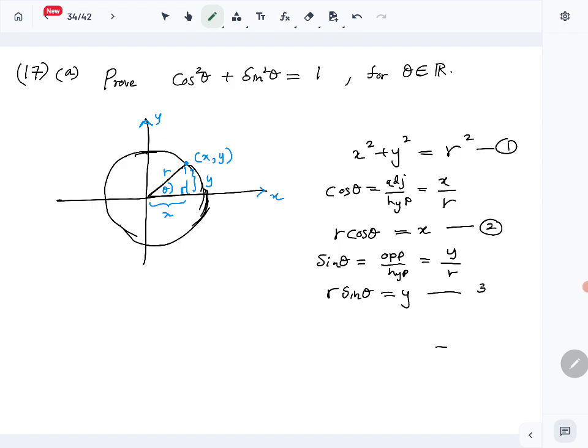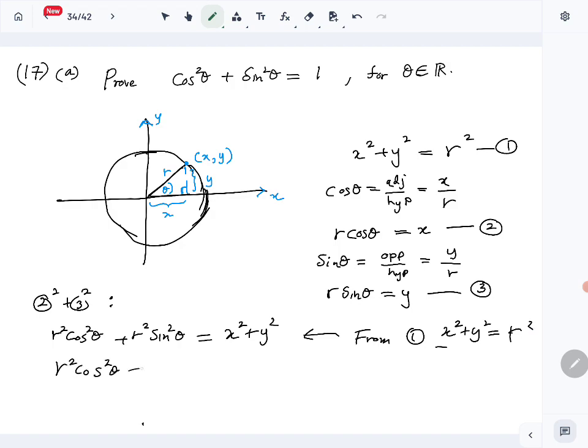Then we will do 2 squared plus 3 squared and see what we get. We get r squared cos squared theta plus r squared sin squared theta equals x squared plus y squared. Then from 1, we know x squared plus y squared equals r squared, so r squared times cos squared theta plus r squared times sin squared theta equals r squared. We can just cancel r squared.